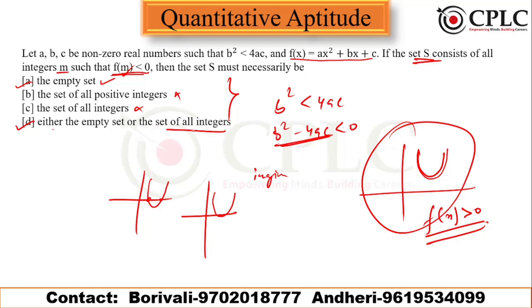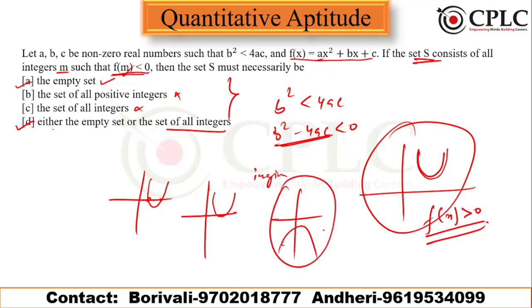Now, for the set of all integers to be possible, what could a be? If a is negative, the graph opens downward. When the coefficient of x² is negative, the graph looks like an inverted parabola, and in that case the function value is always less than zero. We don't know the sign of a — it is just a non-zero real number. If a is positive, the graph always opens upward.